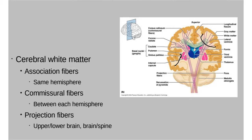Commissural fibers are when the left and right hemispheres communicate with each other. Projection fibers are when the upper part of the brain communicates with a lower part of the brain, or when the brain communicates with the spinal cord — so upper and lower brain, or brain and spine communicating.